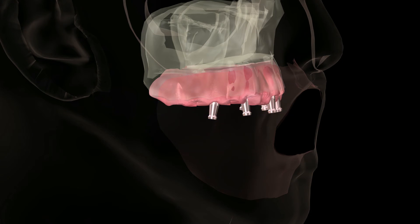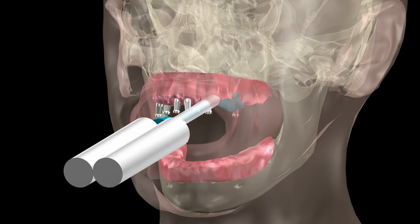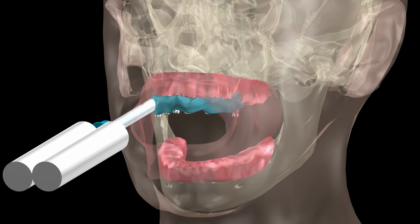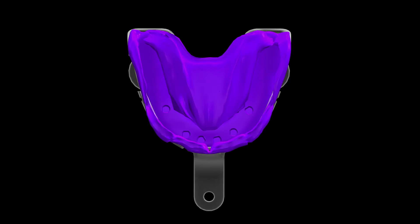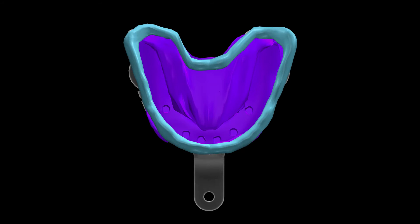Inspect and then perform a final wash impression. Apply a light viscosity PVS directly over the implant copings in the mouth and into the tray interior in all areas, except the implant copings.